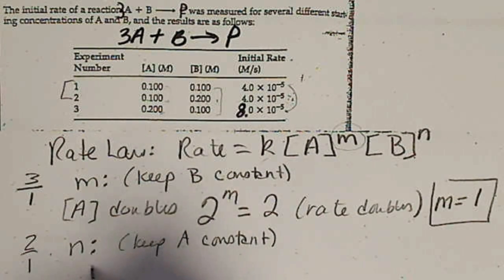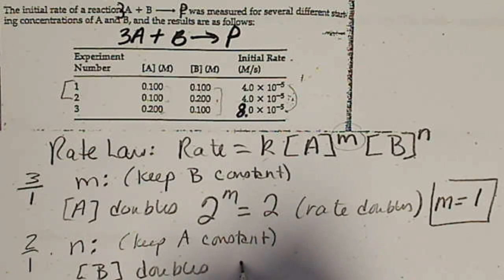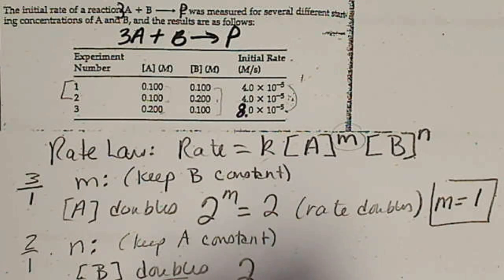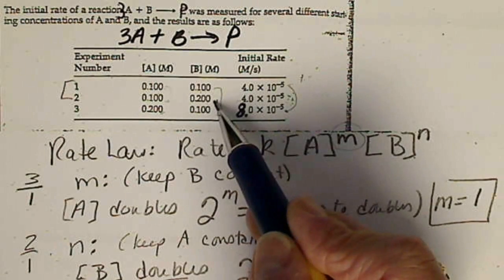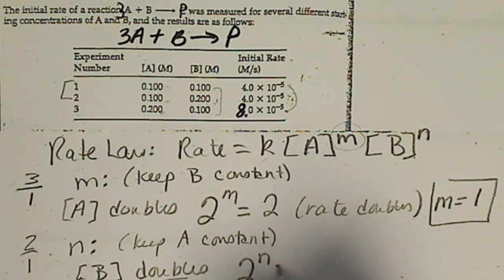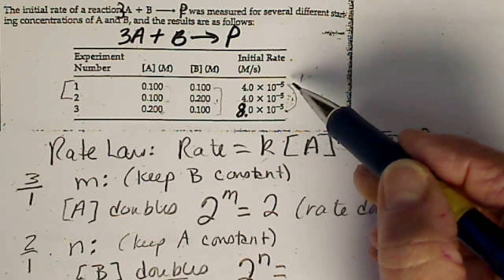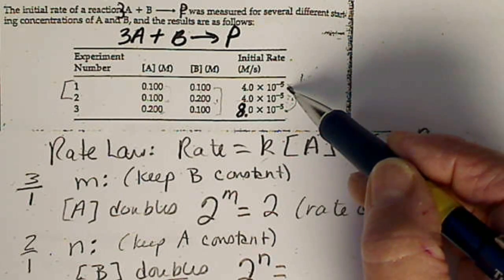So here we have to keep A constant, so that we only have one reactant's concentration varying. And if we look, we double B. So the concentration of B doubles, so that means 2, that doubling means the ratio is 2, 0.2 over 0.1 would be 2, to the N equals.